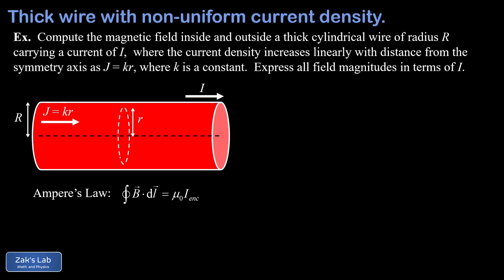In the previous video we found the magnetic field inside and outside a current-carrying wire with uniform current density. Now, as promised, in this video we're going to compute the magnetic field inside and outside a thick wire with non-uniform current density.